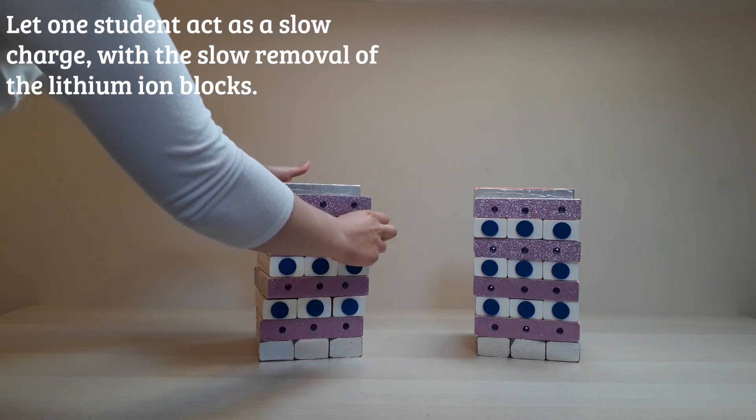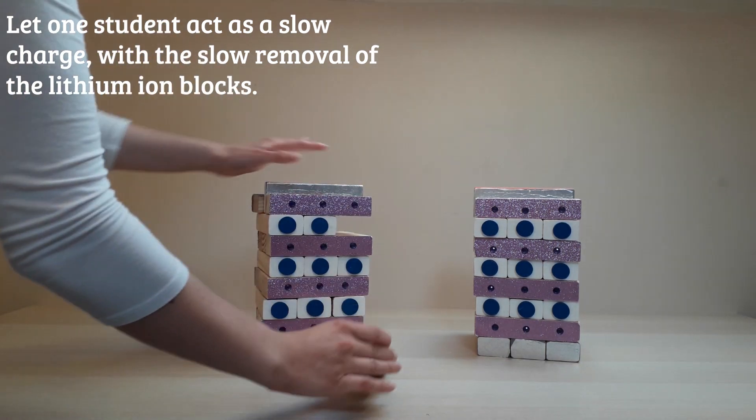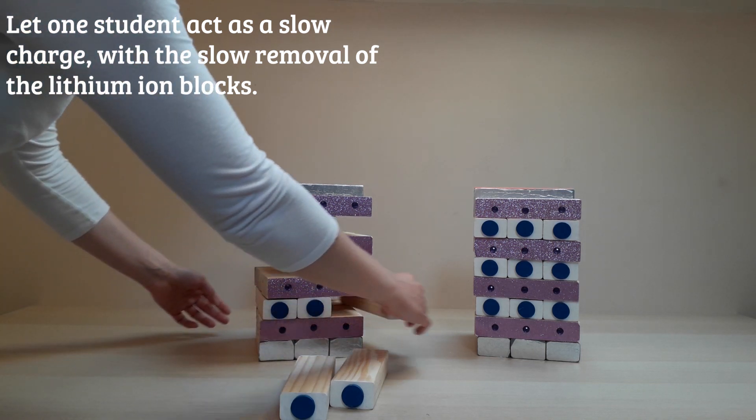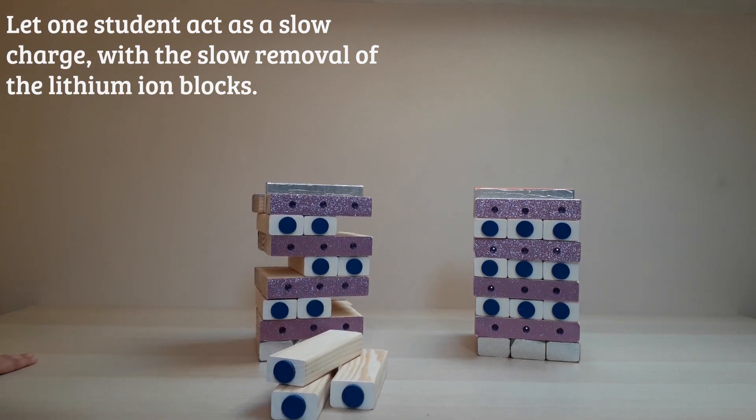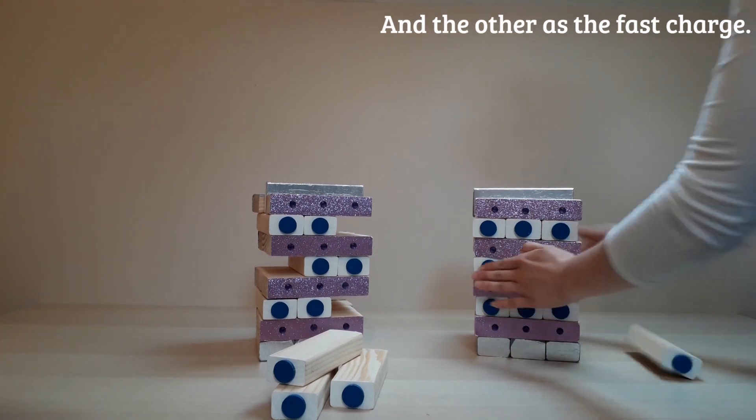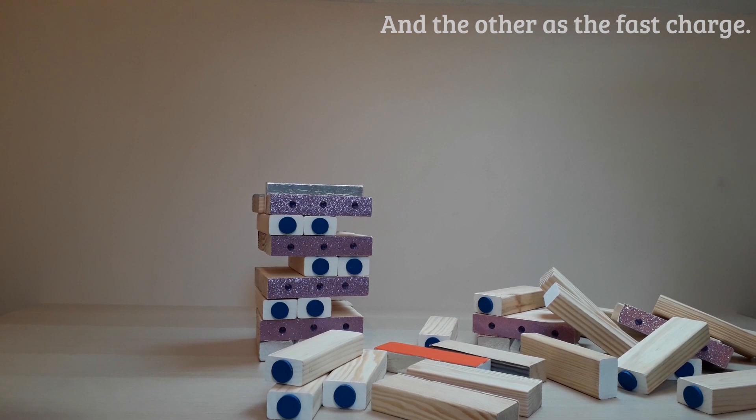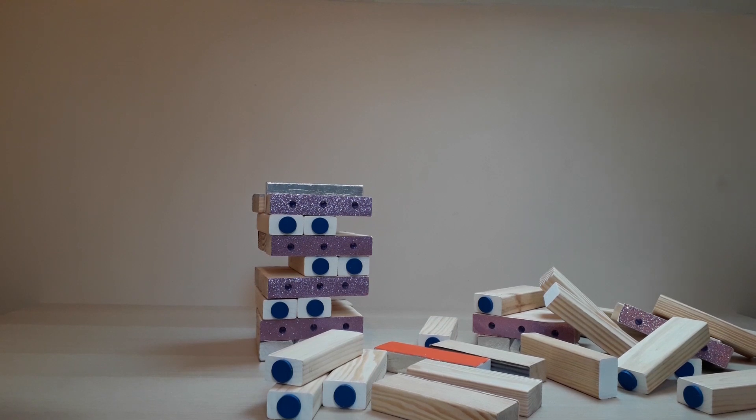Ask one student to represent slow charge which requires the slow removal of the lithium ion blocks. With the second student, ask them to remove the lithium blocks as fast as they can. They may hesitate initially because they don't want to collapse the tower. So reassure them that this is okay to do.